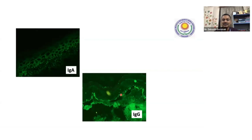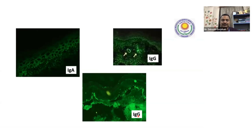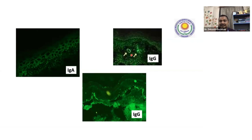Here you see deposit at the dermoepidermal junction — this is IgG. C3 and IgG at the junction comes in bullous pemphigoid. And here I have shown IgA in blood vessels — if you find IgA in vessels, think of HSP. What about IgG in vessels? If you find IgG in vessels, think of other immune complex mediated vasculitis. I hope I have made my message very clear.